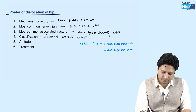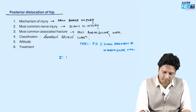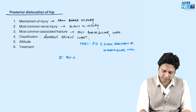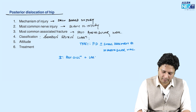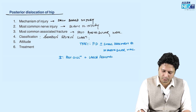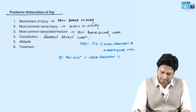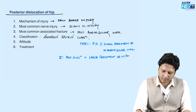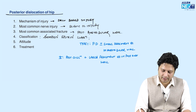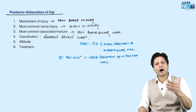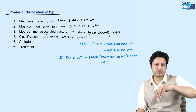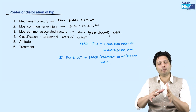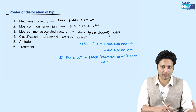Type 2 is posterior dislocation associated with a large fragment fracture in the posterior acetabular wall. This large fragment fracture may require fixation, and that is the reason type 2 has a relatively poorer prognosis and is considered a more severe injury compared to type 1.